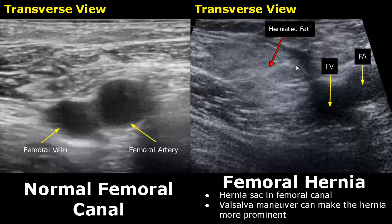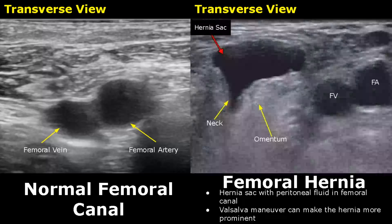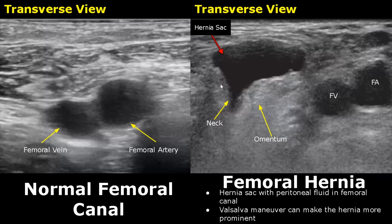A Valsalva maneuver can make the hernia more prominent. In this femoral hernia, peritoneal fluid is found in the hernial sac, and there is also omental fat seen here.